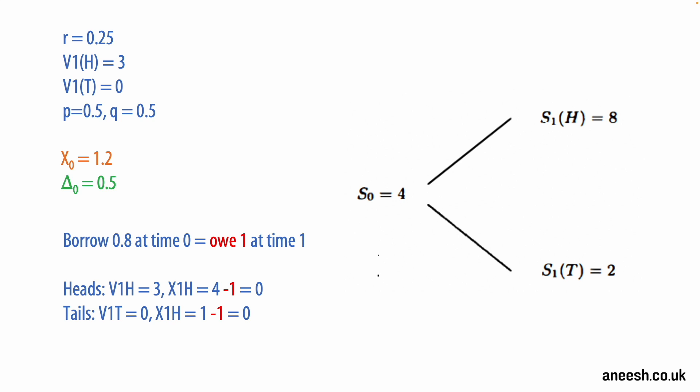Given a heads coin flip, the agent has a stock value of 4 and a cash position of negative 1 to leave them on 3, and this perfectly matches the value of the option that they've sold, which also has a value of 3.